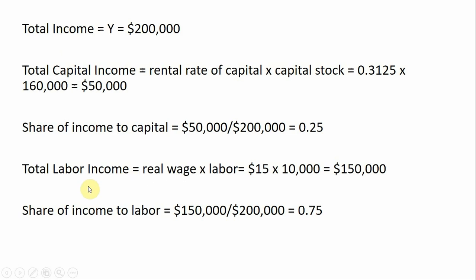For total labor income, take the real wage of $15 times the number of workers: total labor income is $150,000. Dividing by total income of $200,000, the labor share of income is 0.75 or 75%, which again corresponds to the exponent that L is raised to in our aggregate production function.